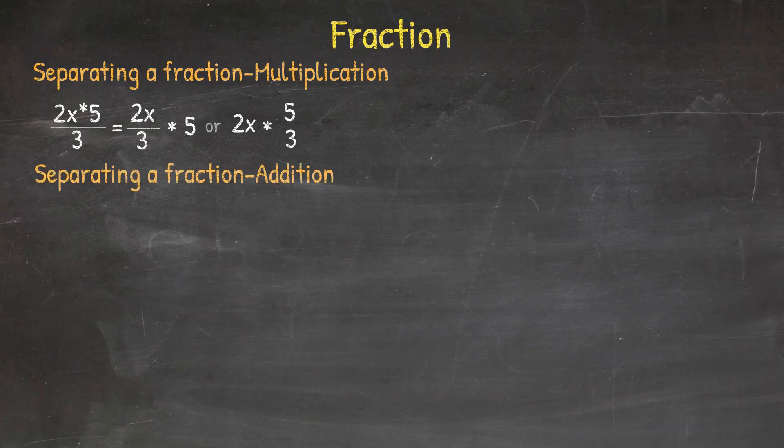Separating a fraction when adding or subtracting in the numerator is different. In this case, both pieces in the numerator inherit the denominator. So for example, 2x plus 5 divided by 3 equals to 2x over 3 plus 5 over 3.